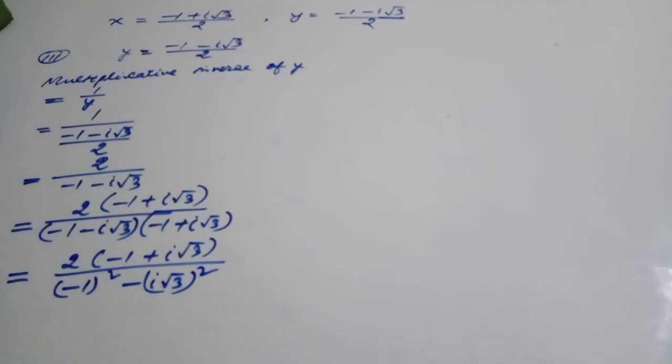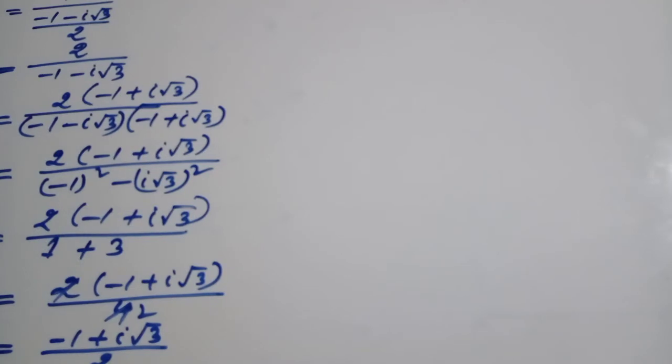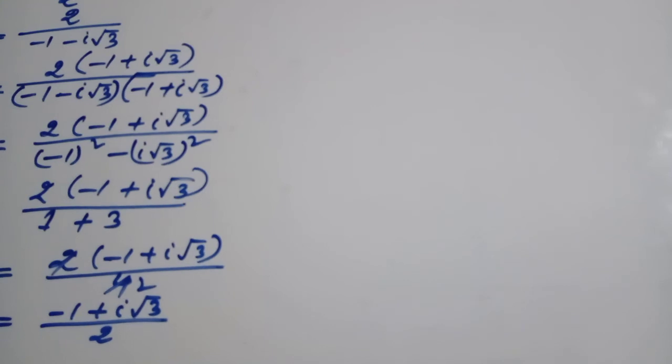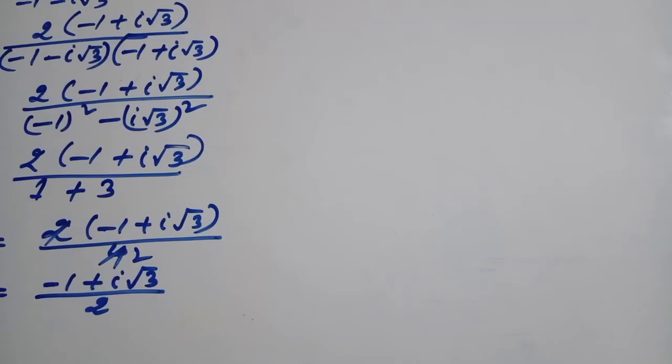Minus 1 whole square, i root 3 whole square. Minus 1 square, this 1, i square, this plus plus 3. 2 minus 1 plus i root 3, 4.